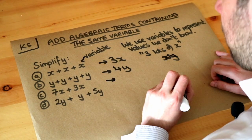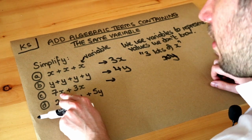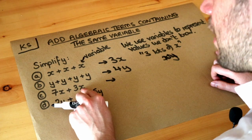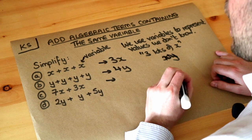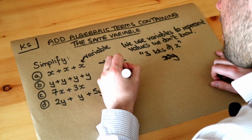Now if we use the word lots of again that might help us with the next one. We've got seven lots of x. 7x means seven lots of x and we're adding three lots of x. How many lots of x do we have in total? Well we have ten lots of x and we write that as 10x.